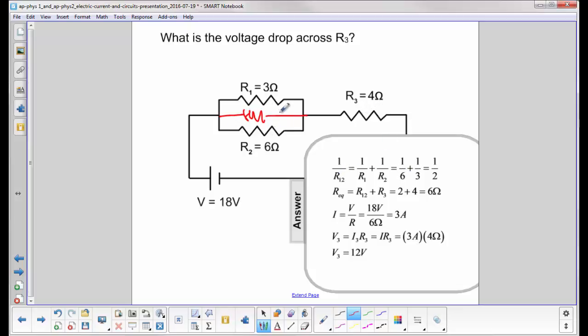So the equivalent resistance of this combination, R12, is 1/6 plus 1/3 over 1/2. Now that is 1 over R12. The equivalent resistance is the inverse of this, 2 ohms. So now I have 2 ohms here, 4 ohms here, total of 6 ohms in the circuit, that's my equivalent resistance.